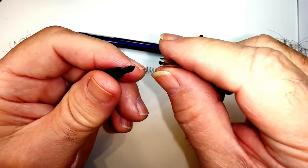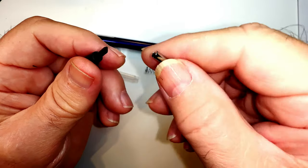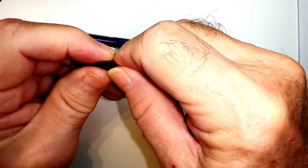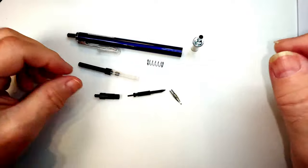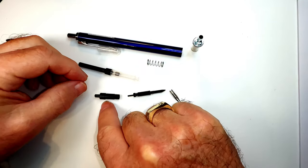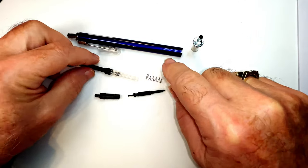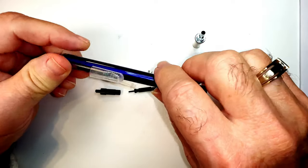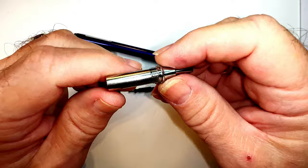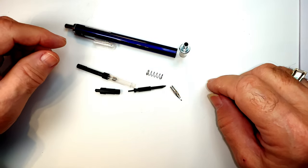And you can pull that feed out of there as well, and there's the plastic feed. So there are all your parts: the feed, the small collar, the spring, the converter, the pen itself, and the nib protector in the front end of the pen. So that's as far as I can take it apart.